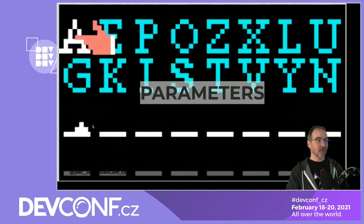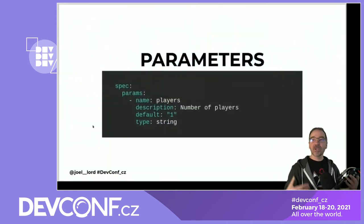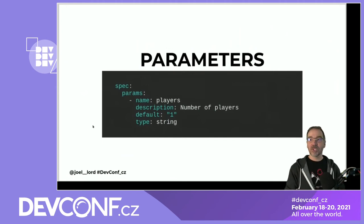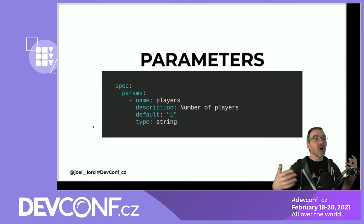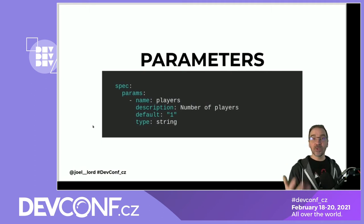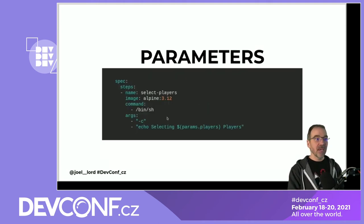Let's make it more complex by adding parameters. One of the goals is to make tasks as reusable as possible. For example, a git-clone task should let you specify the repository so you can reuse that task across all your different pipelines without reinventing the wheel every time. Parameters are how you make your tasks more reusable.